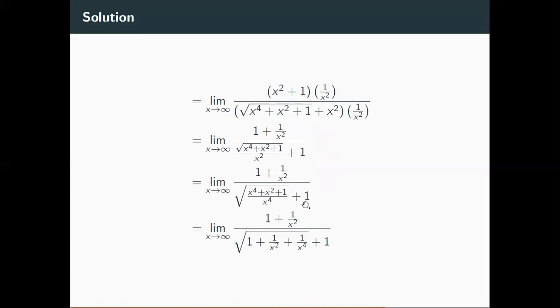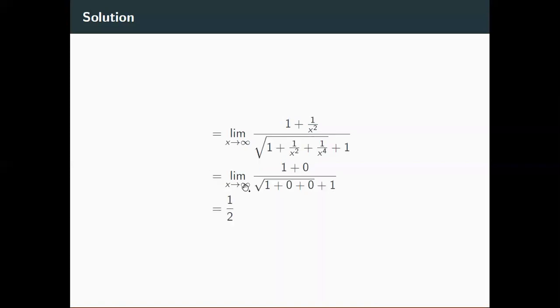So what I'm left with is one plus zero over square root of one plus zero plus zero plus one. And now I don't need to write the limit of x approaches infinity. It's fine if I just leave it the way it is right now. Because the x is gone. So if I just add this up, I get one half.